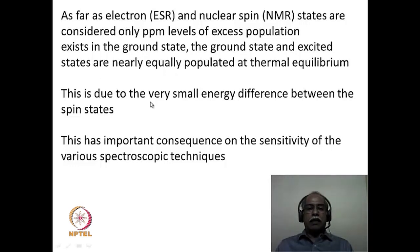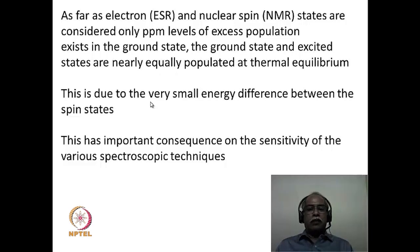The population difference is directly responsible for sensitivity, because the intensity of absorption is directly proportional to the excess population present in the ground state compared to the excited state. When the entire population is in the ground state, the technique will be very sensitive as there are many molecules to excite. When populations between excited and ground state become equal, very little excess population remains to excite to the higher level, so the intensity of absorption and consequently the sensitivity will be low — as in NMR.